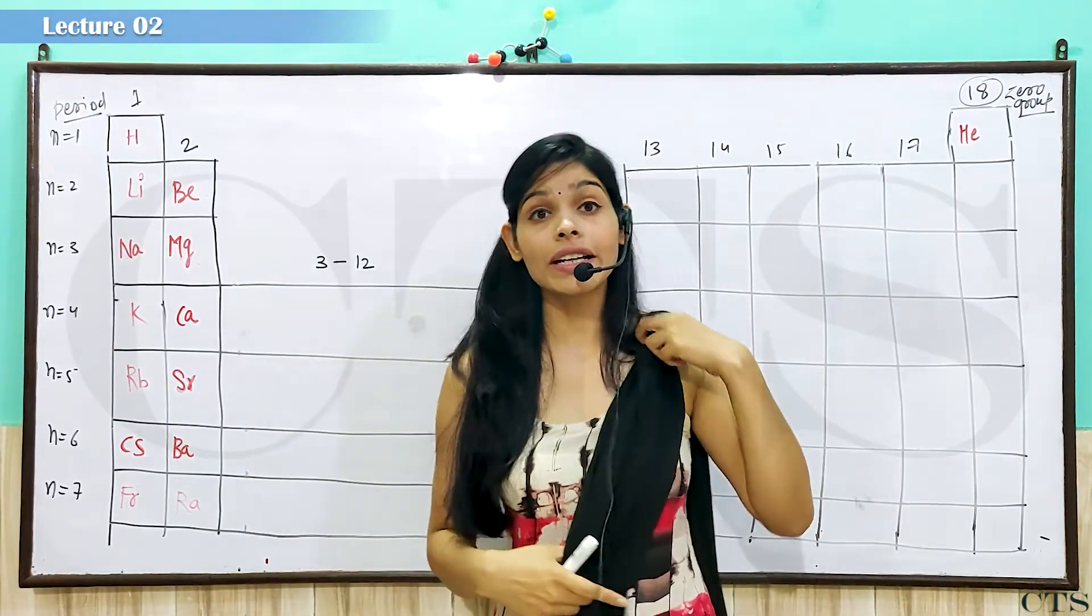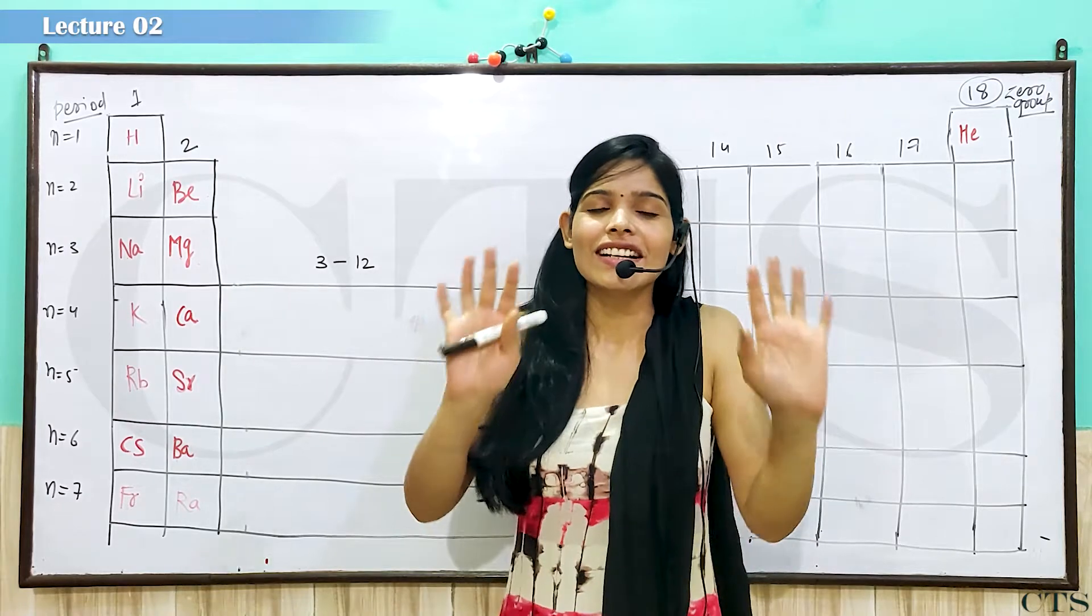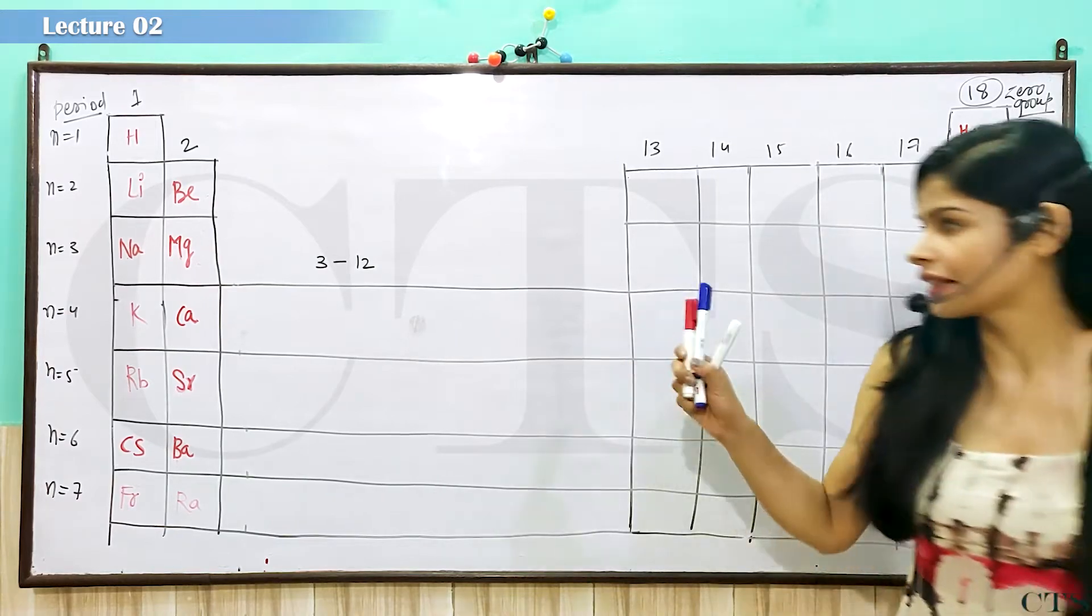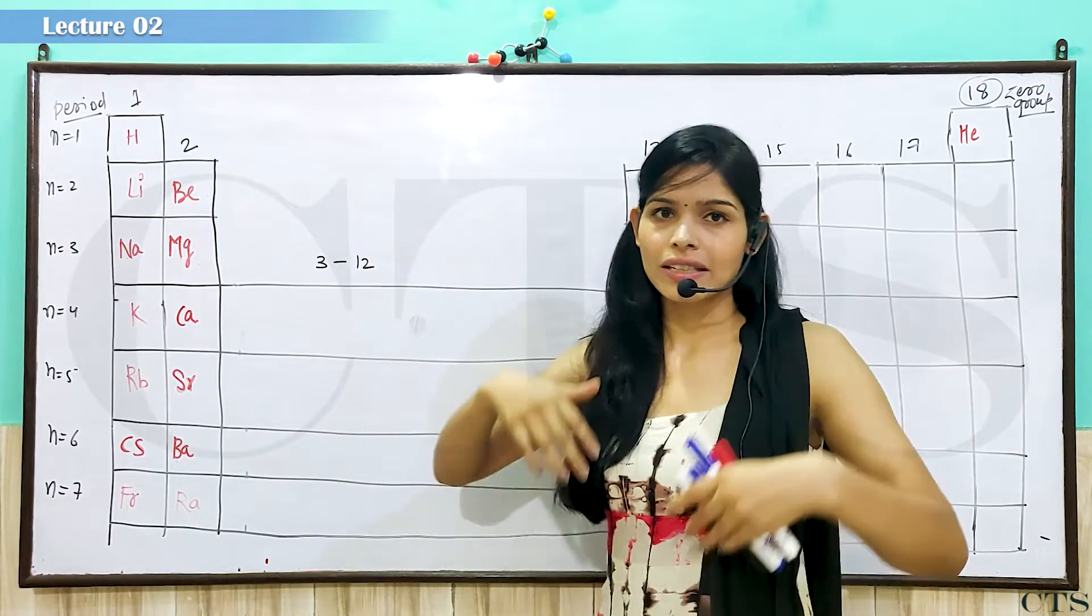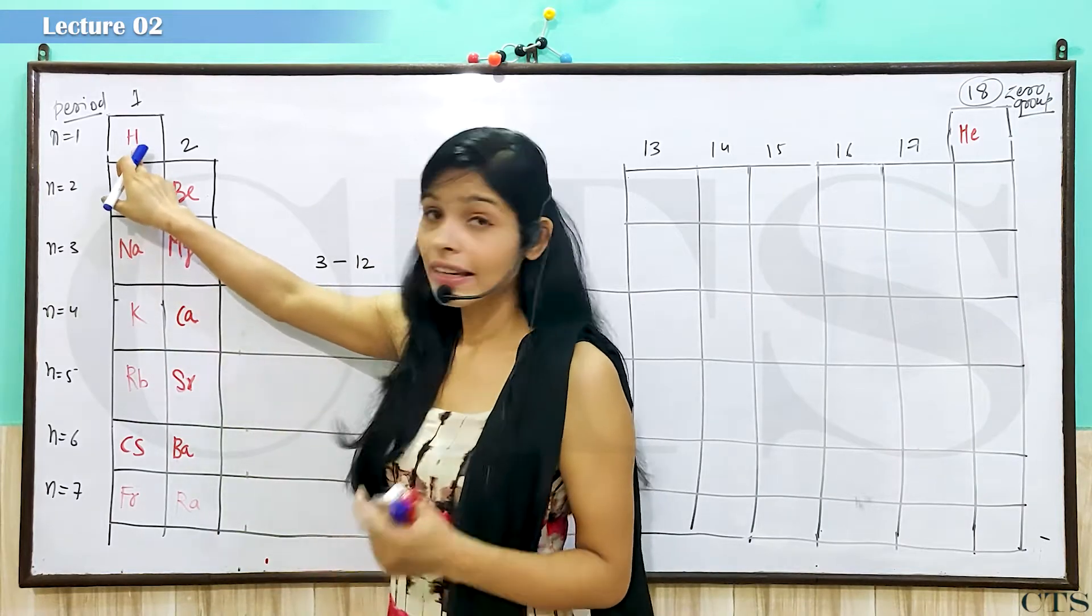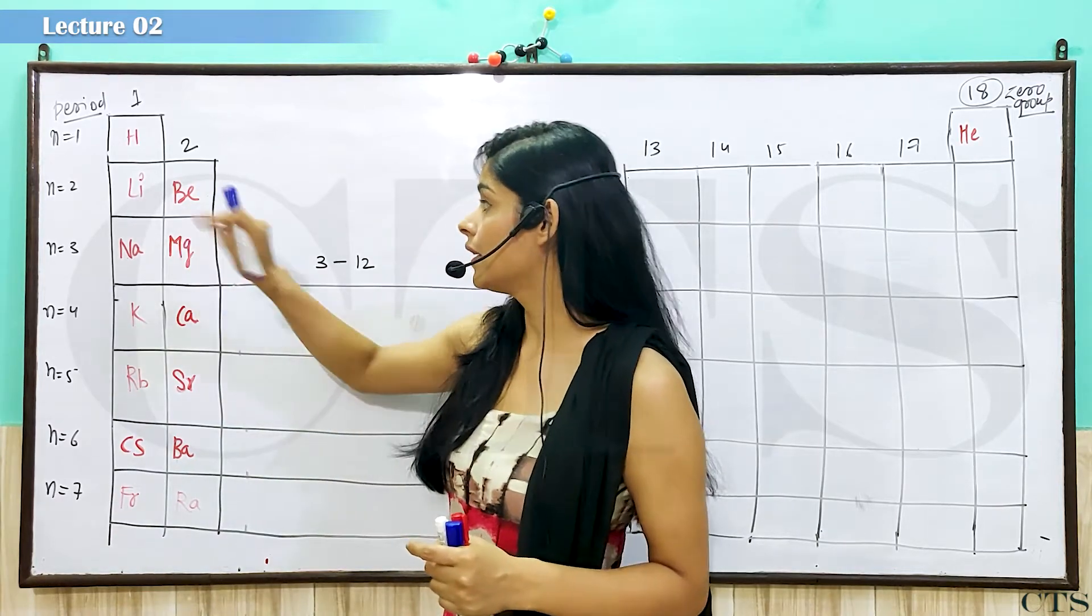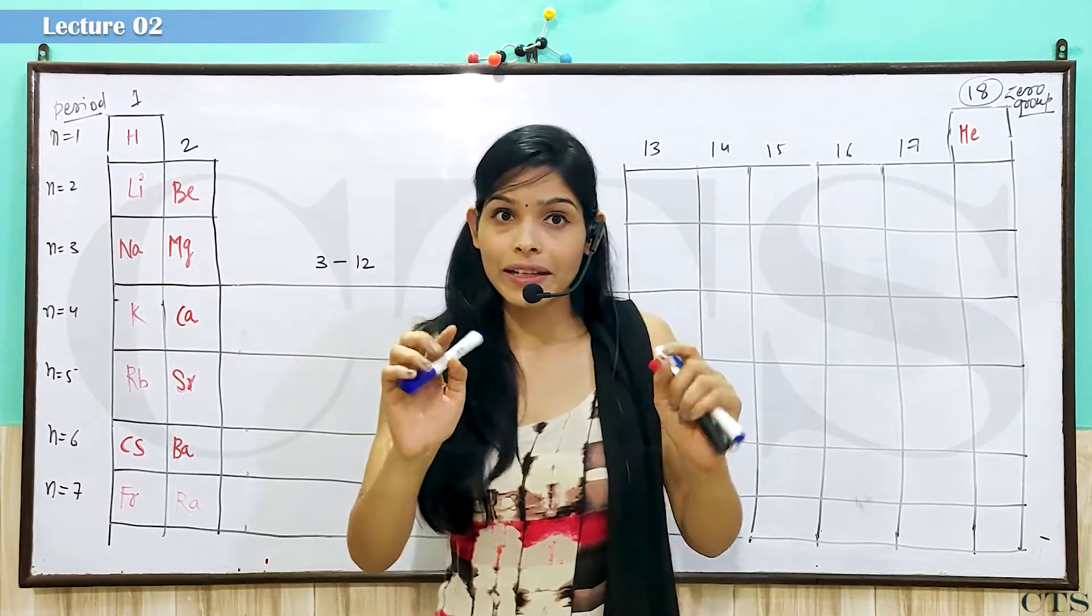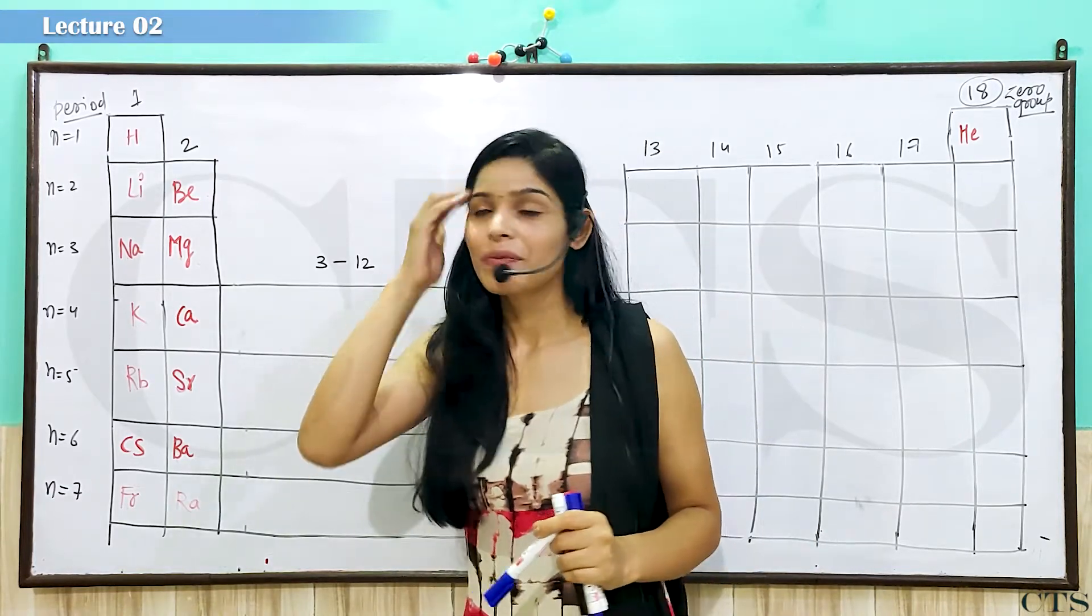Ab beta ji, main sab se pahle aapko periodic table yad karane wali hu. Jab aap periodic table ko yad kar lenge, to chizhe bhoot bhoot bhehad bhehad sari chizhe aasan ho jayengi. Dhekhye beta ji, yah mainnay aladi thoda column column bana ke rakhye hai, taak ki hum thoda jaldi kama kar pahehen.